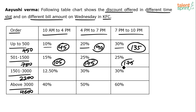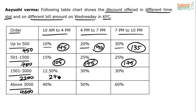For the 4 PM to 7 PM slot the discount on a 700-rupee bill also comes out to 175 — the discount remains the same between those two later slots. For 2200 rupees: 12.5% — 10% is 220, 2.5% is one-fourth of 220 which is 55, so 12.5% of 2200 is 275 rupees, and 30% is 660 rupees.